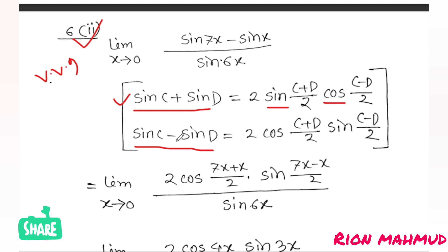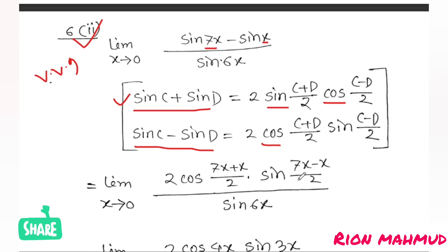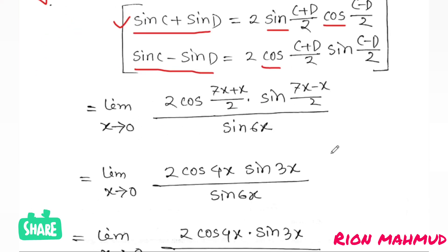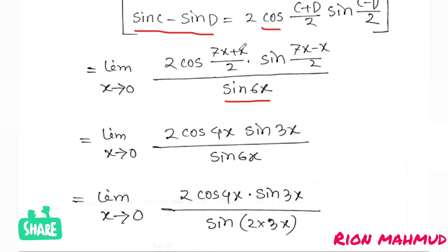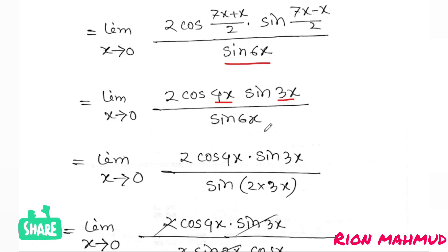Applying sin C minus sin D to sin7x minus sinx: C is 7x, D is x. So (C+D)/2 gives (7x+x)/2 equals 8x/2 equals 4x. And (C-D)/2 gives (7x-x)/2 equals 6x/2 equals 3x. So sin7x minus sinx equals 2 cos4x sin3x.